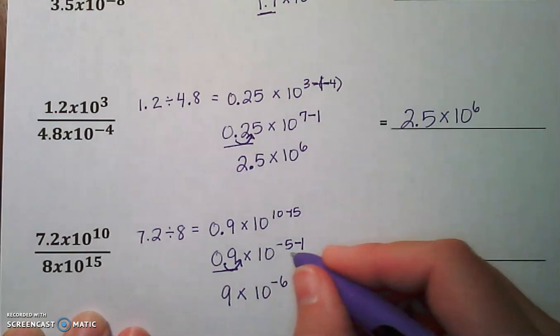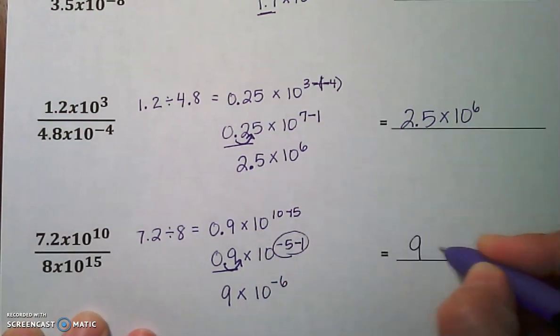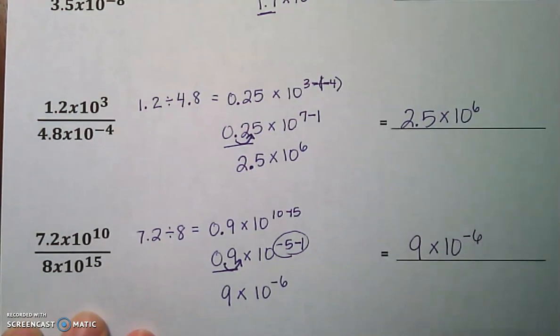Watch those integer, those integer rules. They can get you, okay? So that's 9 times 10 to the negative 6. I hope these examples were helpful for you. Thank you.